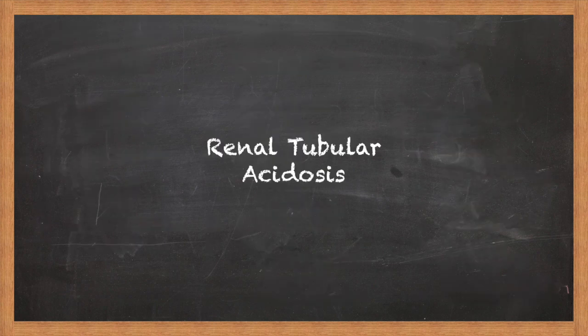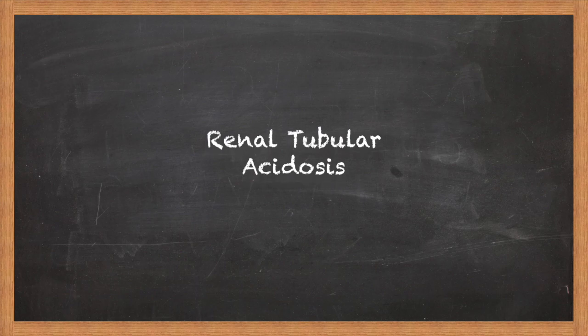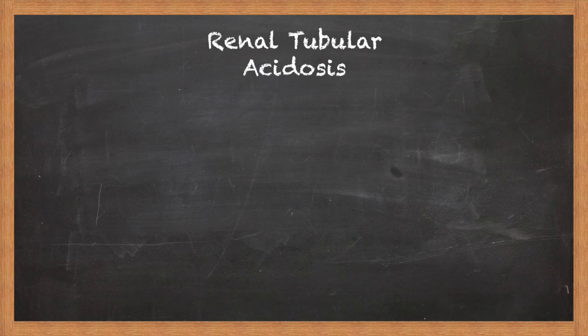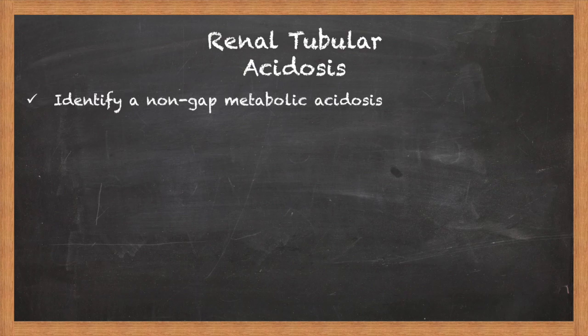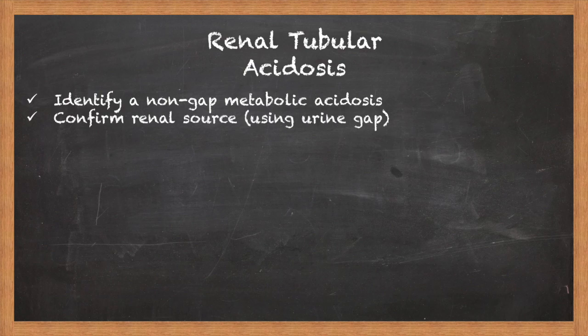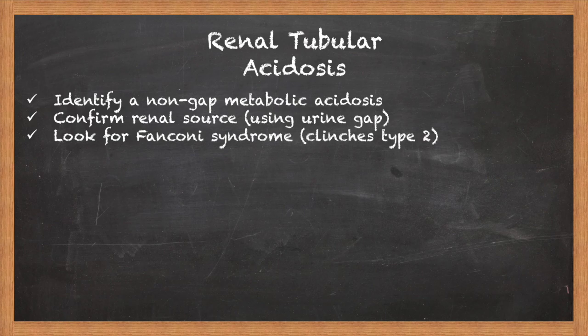So when it comes down to distinguishing these for a board exam, it's actually rather simple. Here is the approach I would recommend. The first step is to identify that you have a non-anion gap metabolic acidosis — often called a hyperchloremic acidosis. You then want to confirm that you have a renal source of this non-gap acidosis; you would need to use the urine gap to determine this. The next step would be to look for evidence of Fanconi syndrome, as we talked about before, because this would essentially clinch a type 2 RTA — you're done, move on to the next question.